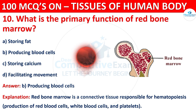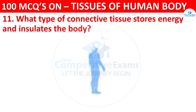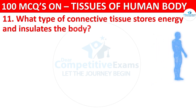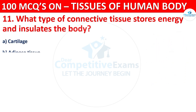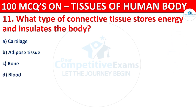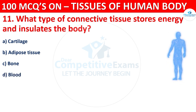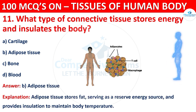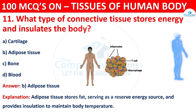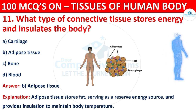Question number eleven: what type of connective tissue stores energy and insulates the body? Options are cartilage, adipose tissue, bone, or blood. The correct answer is B, that is adipose tissue. Adipose tissue stores fat, serving as a reserve energy source, and also provides insulation to maintain body temperature.